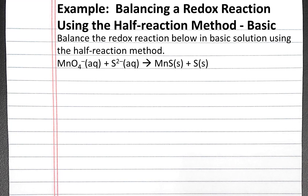In this example problem, we'll balance a redox reaction in basic solution using the half-reaction method. Our first step is to identify the oxidation and reduction half-reactions. One method to do this is to determine the oxidation states of all of the atoms in the reaction. So we'll show the oxidation states below.